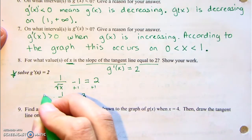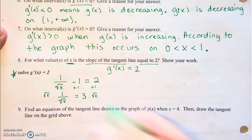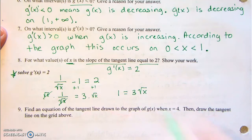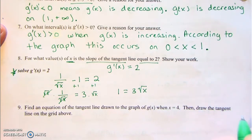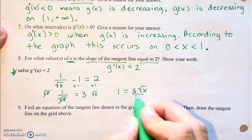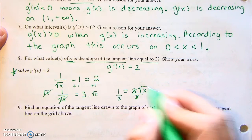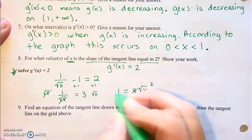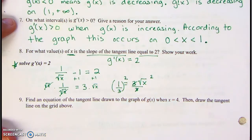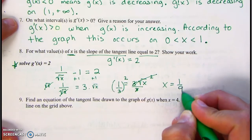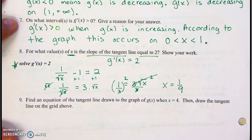We can't solve for x in the denominator, so we multiply both sides by the square root of x — those divide out — giving 1 equals 3 times the square root of x. Dividing by 3 and then squaring both sides, we get x equals 1 ninth.